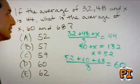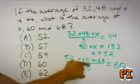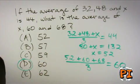This gives you 60, the average of 52, 60, and 68. Answer choice D, and you are done.